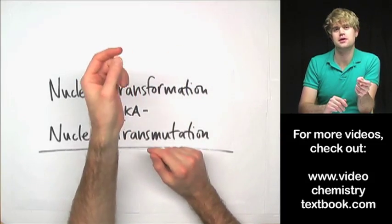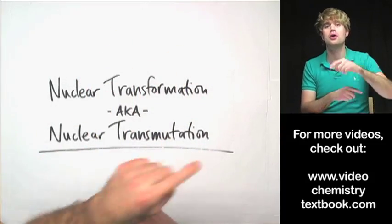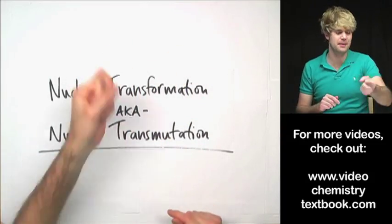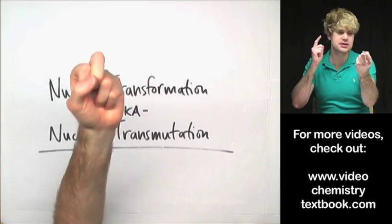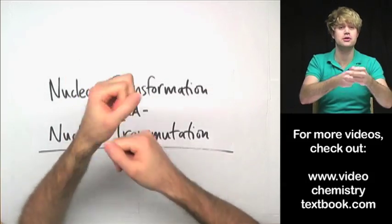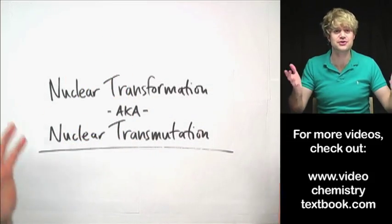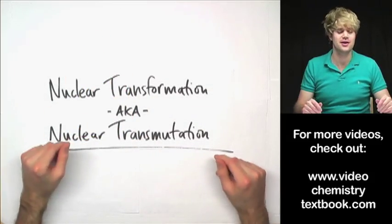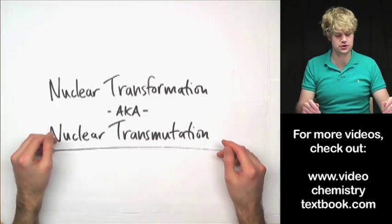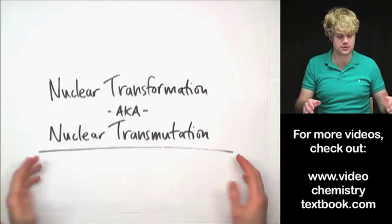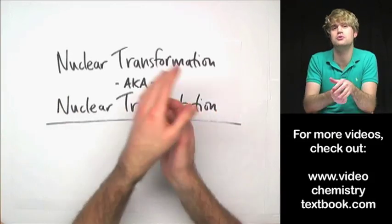Did you know that scientists can take one element and turn it into another by taking an atom and slamming protons and neutrons into it? It's true. This is called nuclear transformation, which is also sometimes known as nuclear transmutation.